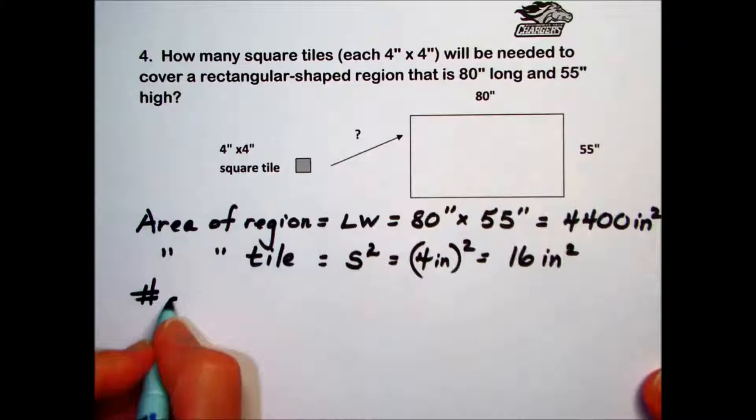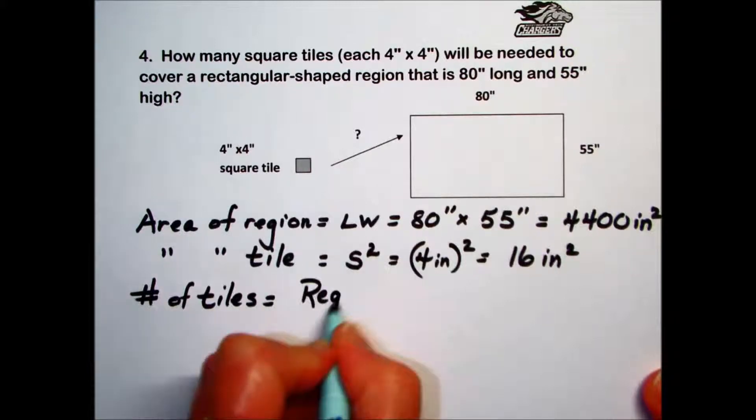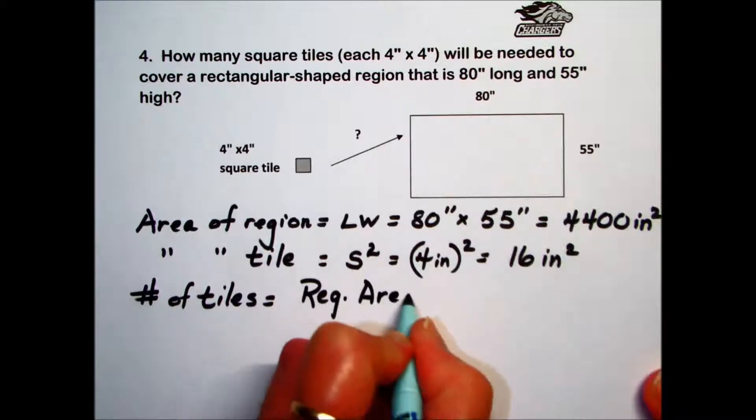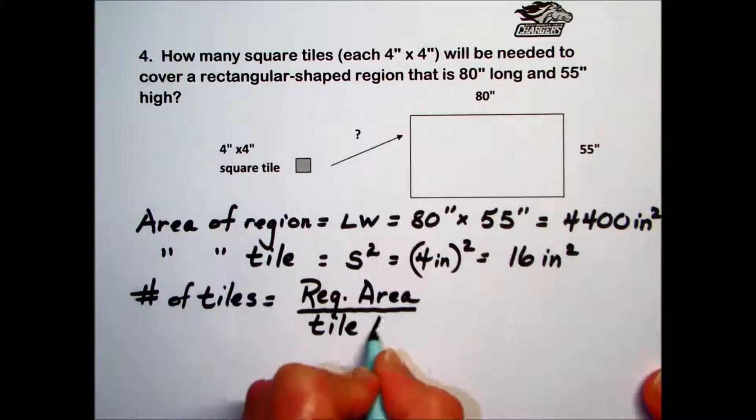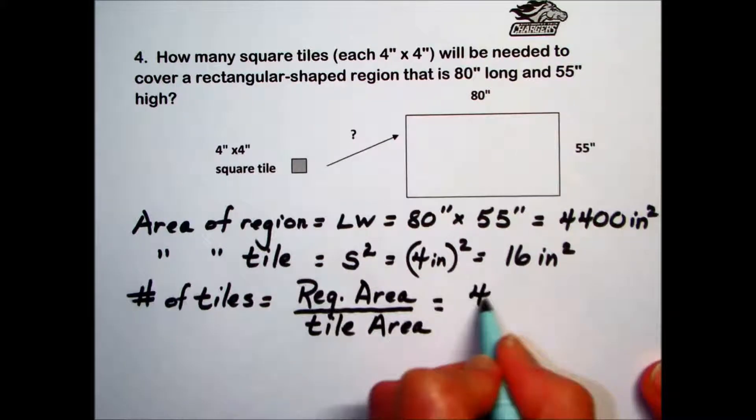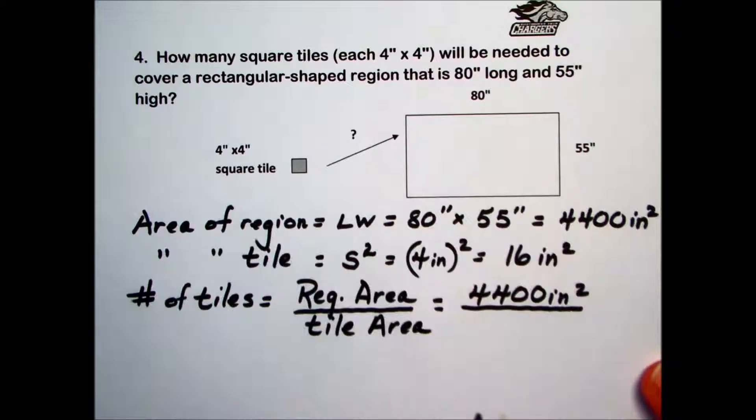Then, to answer the question how many tiles, we will divide the region area by the tile area. The region area was 4,400 inches squared, and each tile covers 16 square inches. So to equate that into the number of tiles, we do our division.